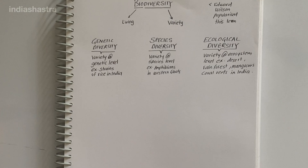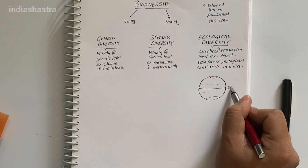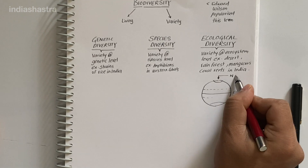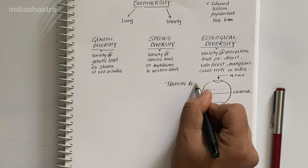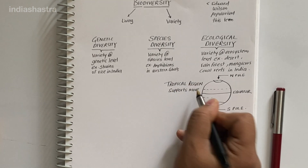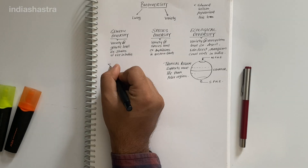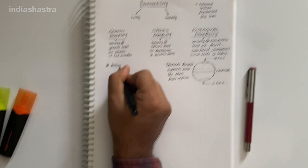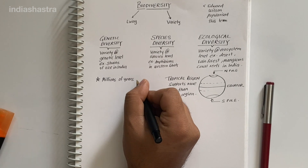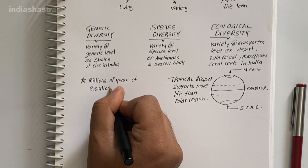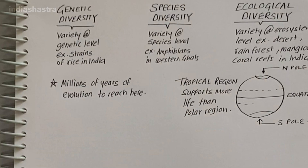Diversity of life is not evenly distributed. Tropical regions support more life than polar regions. That is why India has greater ecosystem diversity than other Scandinavian countries like Norway, Sweden, and Finland, which are located near the polar region. India has taken millions of years of evolution to accumulate this rich diversity, but we could lose all that wealth in less than two centuries if the present rates of species loss continue.